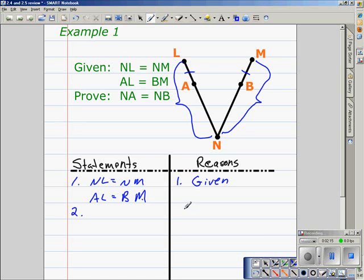Next, we're going to establish with the segment addition postulate that measure of NL is equal to the measure of NA plus the measure of AL. Also, we'll establish that the measure of NB plus the measure of BM is equal to the measure of NM.